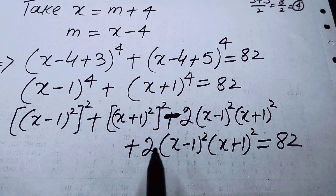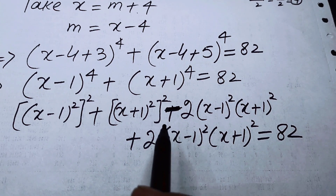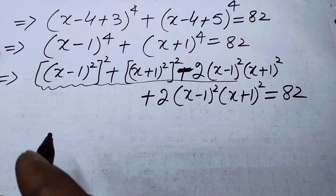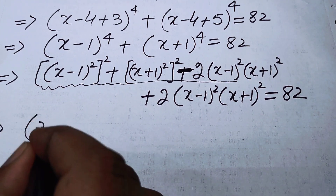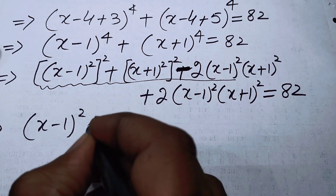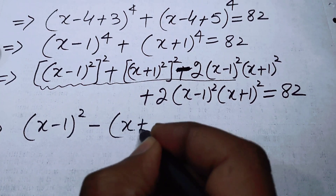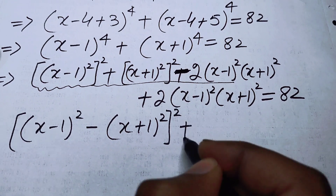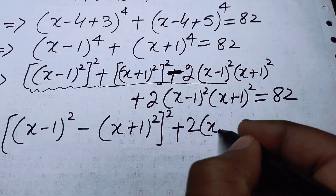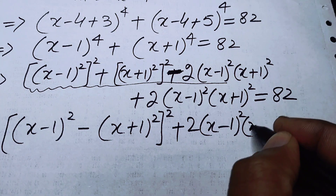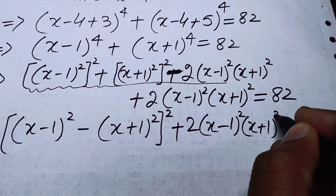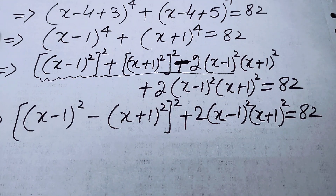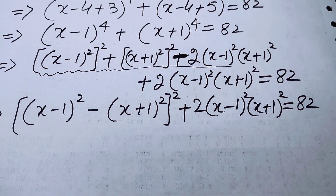When we combine these terms, we obtain [(X-1)² - (X+1)²]² + 2(X-1)²(X+1)² = 82. After combining, we get the remaining terms in this form, and now we can apply a famous identity.